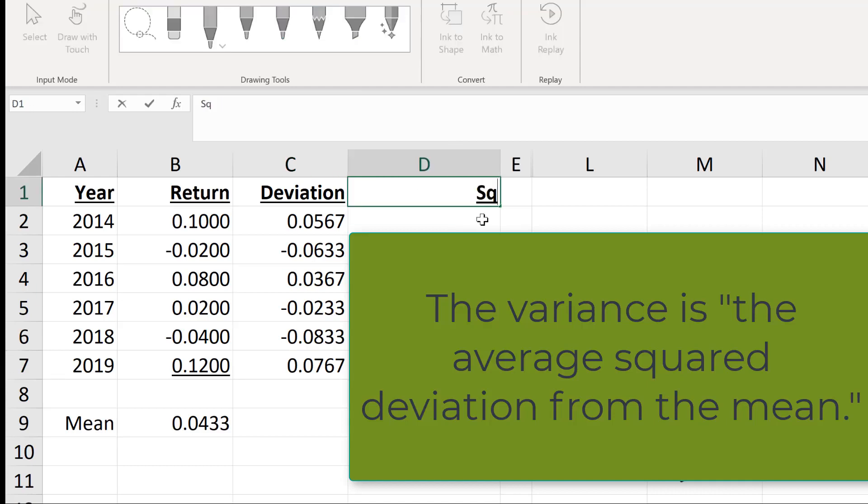We'll make this column the squared deviation. Again, we'll go observation by observation and square the deviation. In this cell, I'm going to say it's equal to the deviation raised to the second power—the deviation squared. Once again, I'll copy that down. So I have the squared deviations.